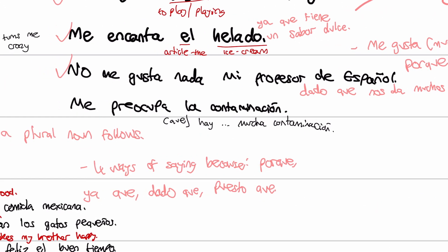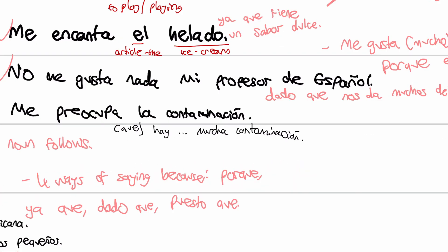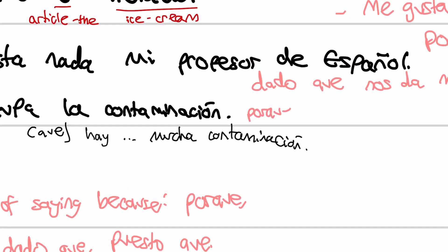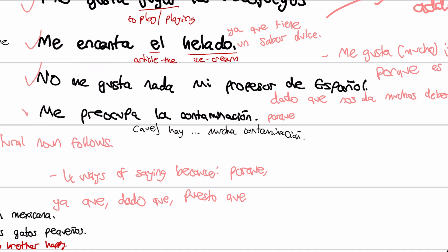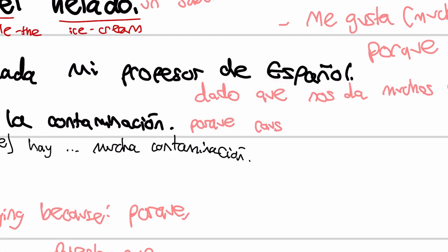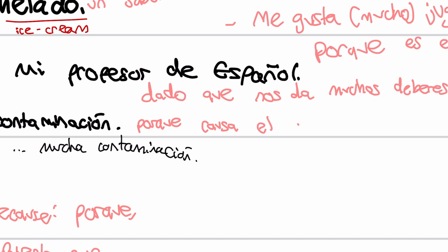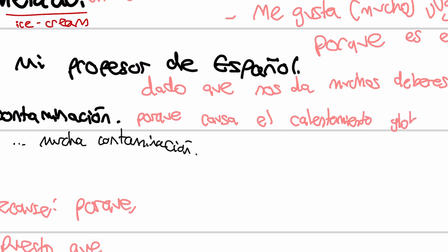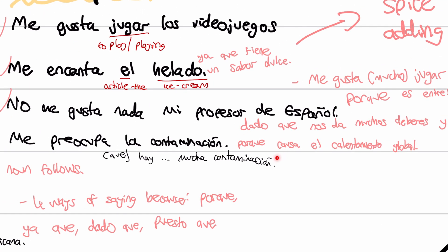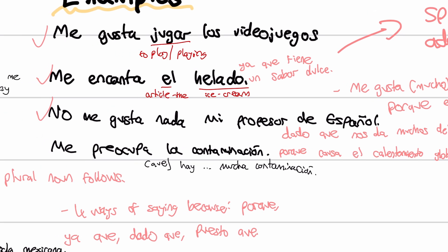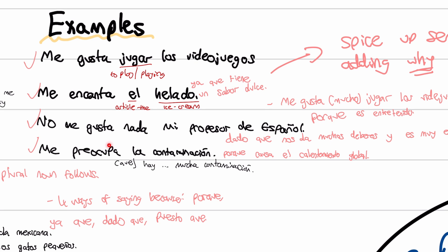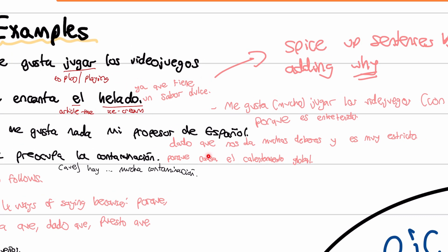Last one: me preocupa la contaminación. Porque causa el calentamiento global. Calentamiento global is global warming. So: pollution worries me because it causes global warming. There are four examples made longer in pink with four different ways of basically saying because and giving a reason. That's how you spice up these sentences.